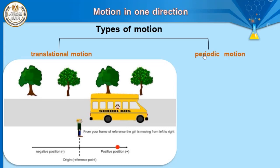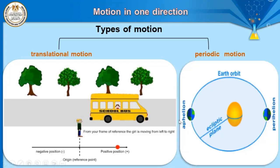The second type of motion is periodic motion. What is the meaning of periodic motion? Periodic motion is the motion which repeats itself regularly in equal intervals of time. There are many examples of periodic motion, and it can be represented by three types: motion in a circle, wave motion, and oscillatory motion. We talked about oscillatory motion and wave motion in the previous year, but now we will only talk about translational motion, not periodic motion.